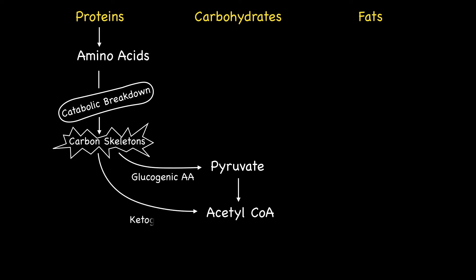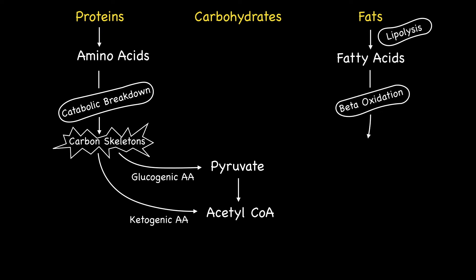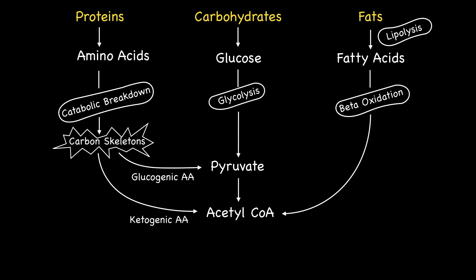While this stands true for glucogenic amino acids, ketogenic amino acids, such as leucine, produce Acetyl-CoA without the need to go through pyruvate. Stored fats undergo lipolysis during times of need, releasing fatty acids which enter into beta-oxidation, producing large amounts of Acetyl-CoA. Finally, the catabolic breakdown of carbohydrates ultimately leads to the release of glucose and its utilization within glycolysis to give pyruvate, followed by its decarboxylation to give Acetyl-CoA.